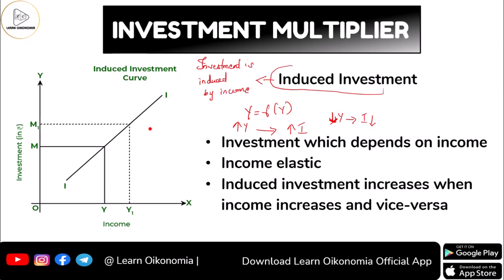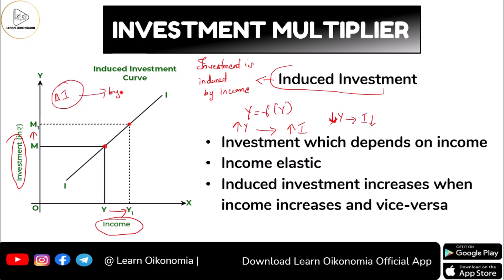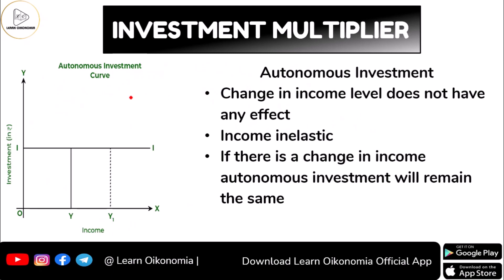You can see this in the diagram, where income is measured along the x-axis and investment along the y-axis. An increase in income from Y to Y1 has increased investment from M to M1. This investment line or curve II is the induced investment function, because the change in investment is caused by a change in income.